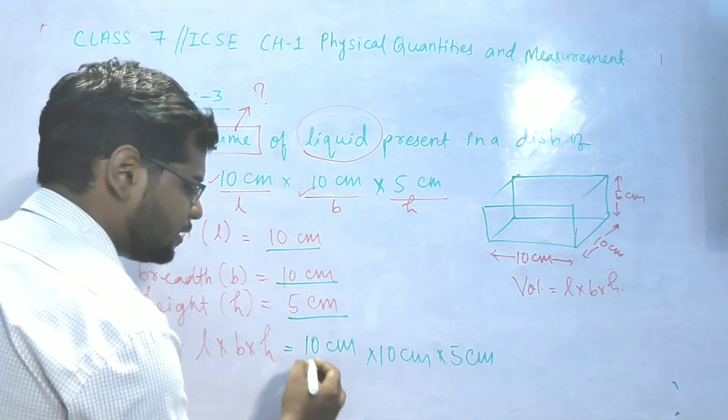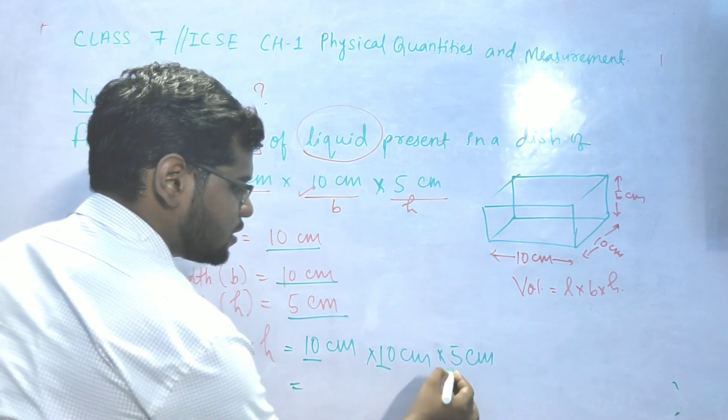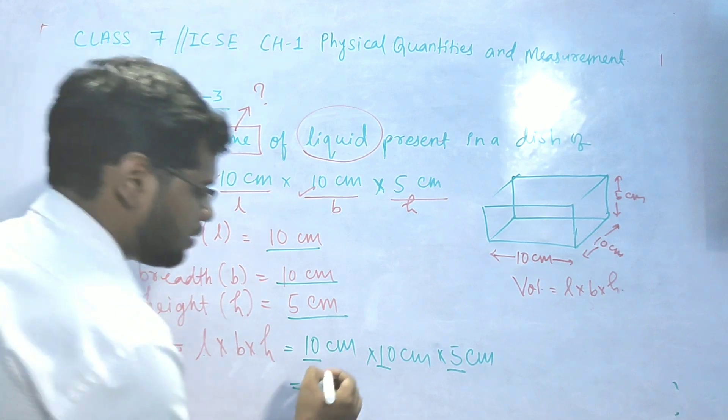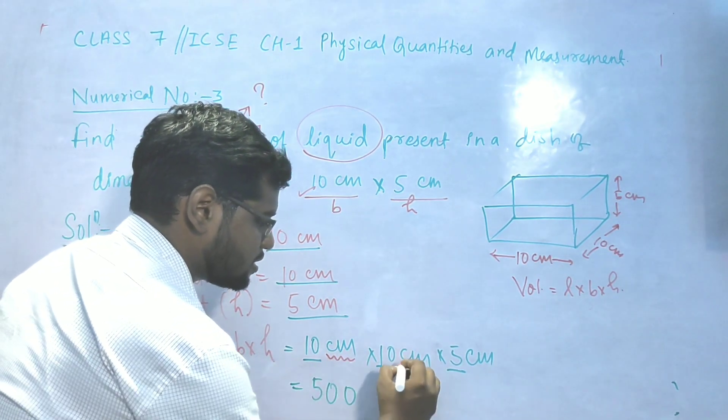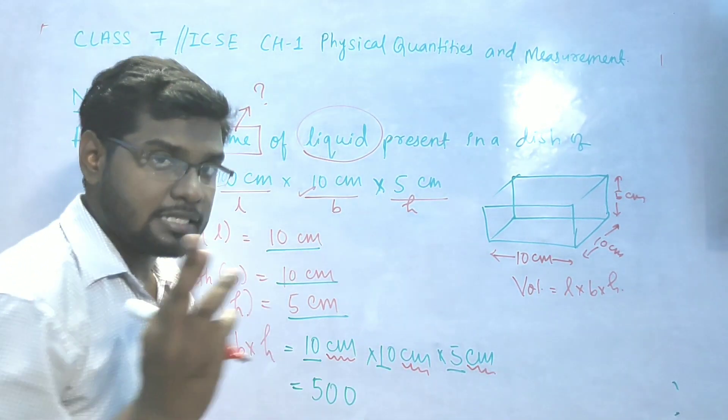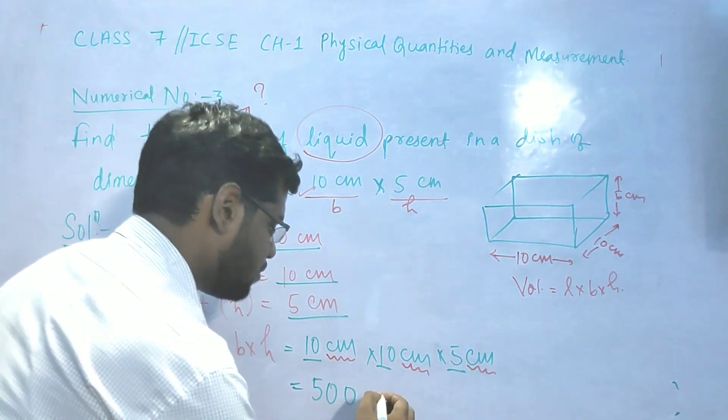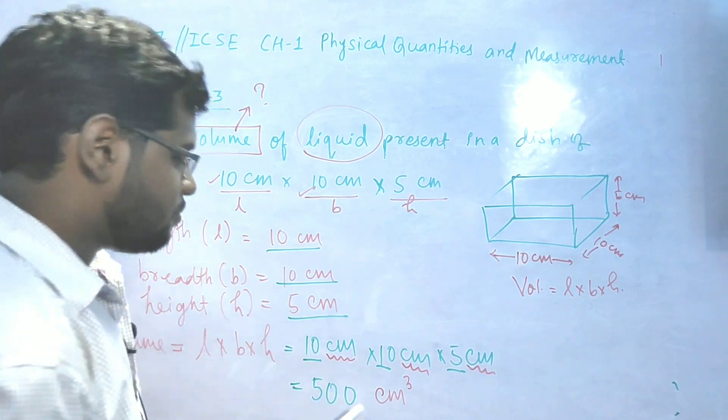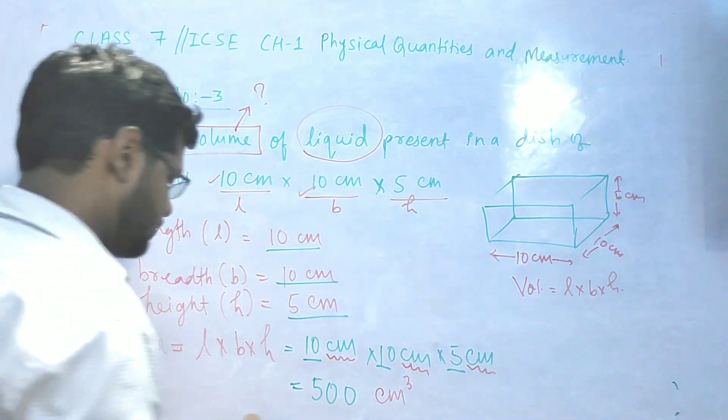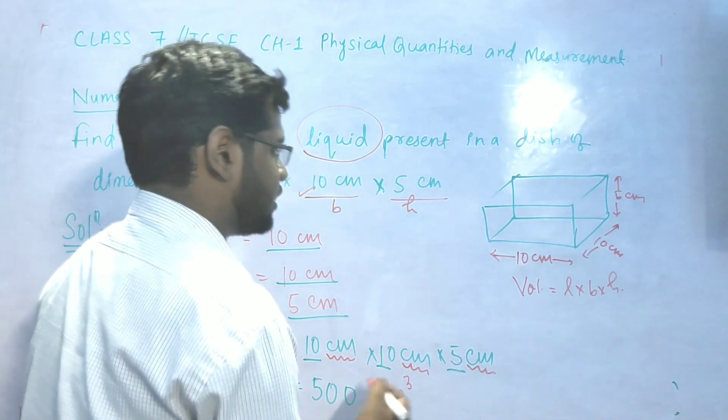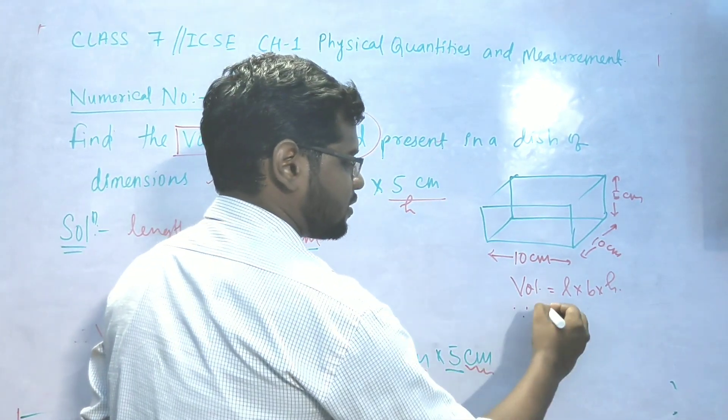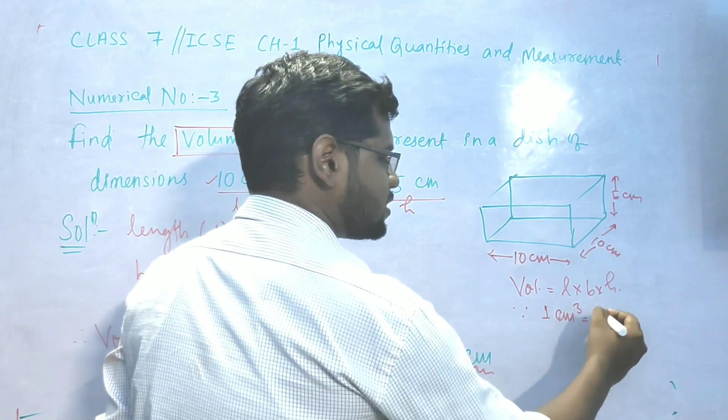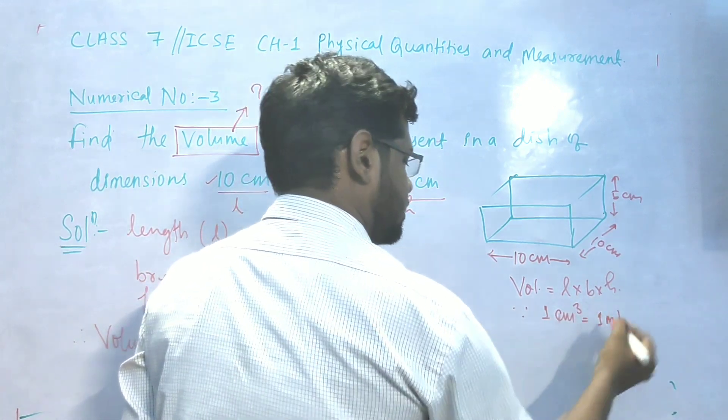So now we look at 10 into 10 into 5. And now we look at centimeter, centimeter cube. Three centimeters in product form, so we write centimeter cube. We can convert to milliliter. The conversion factor is 1 centimeter cube is equals 1 milliliter.